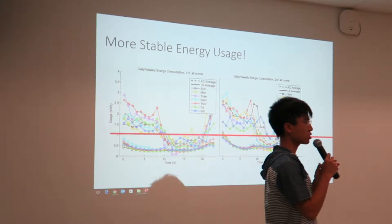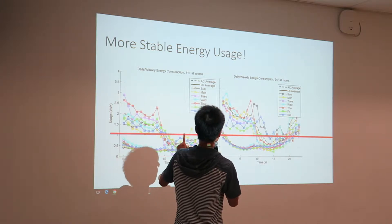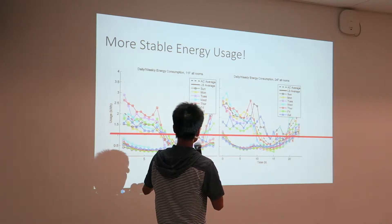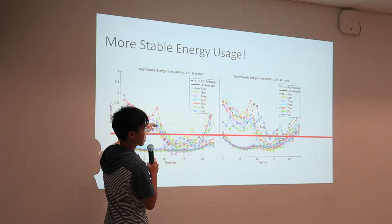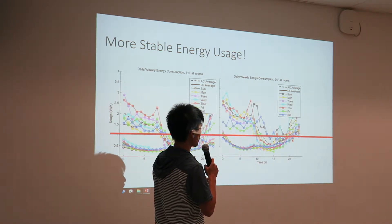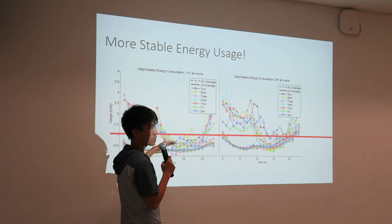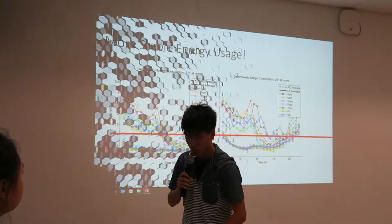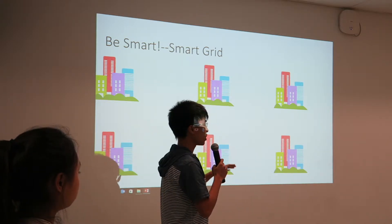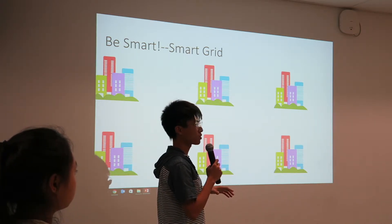After talking about how to change residents' behavior, we would also like to propose more efficient energy usage through more stable energy consumption. From the graph, we can see that the weekly energy consumption of the 11th and 24th floors is really unstable and chaotic — sometimes far below average and sometimes far above. When energy usage is very high, it hugely decreases the efficiency of our energy usage. So we propose to store energy when consumption is low and use that stored energy when consumption is high, in order to flatten the peak value and increase energy efficiency.